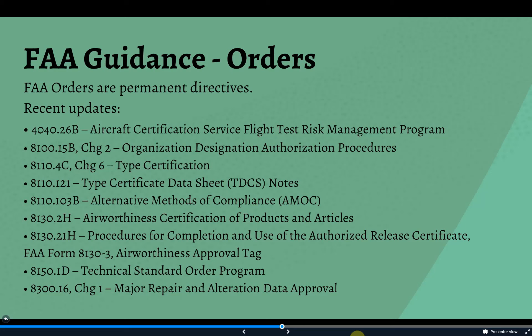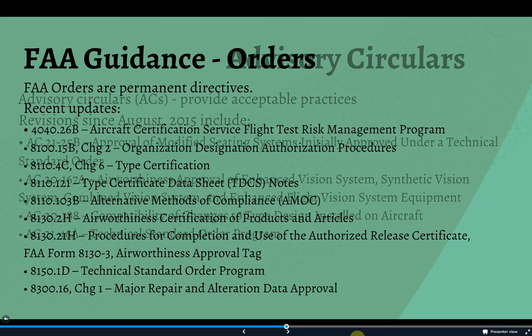Revision B of the procedures manual was approved at the end of August 2015, and there's been a lot of new material published by the FAA since that time. The following orders were published or updated: 8040-26B for flight test information; 8100-15, which is directly applicable to the ODA; 8110-4C with Change 6 recently released; 8110-121, which covers TCDS notes and updated airworthiness approval tag information; 8150-1D, which updated the TSO program; and 8300-16, updated to address major repair and alteration data approvals.